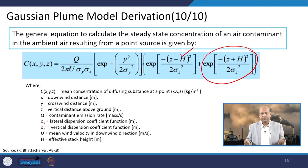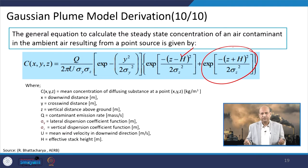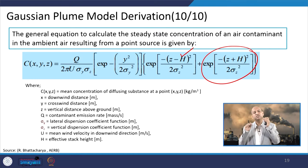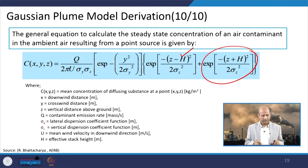The final Gaussian plume model equation is: C(x,y,z) = Q/(2π·u·σy·σz) × exp(−y²/2σy²) × [exp(−(z−H)²/2σz²) + exp(−(z+H)²/2σz²)], where H is the effective stack height. The second exponential term accounts for ground reflection. Here, x is the downwind distance, y is the crosswind distance from the centerline, and z is the height of the receptor above ground level.